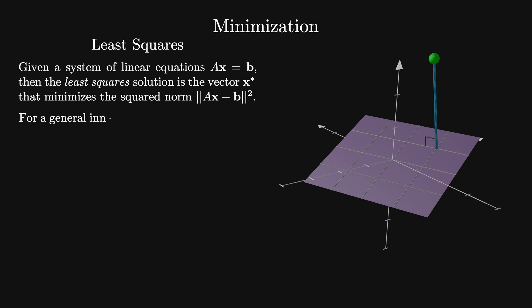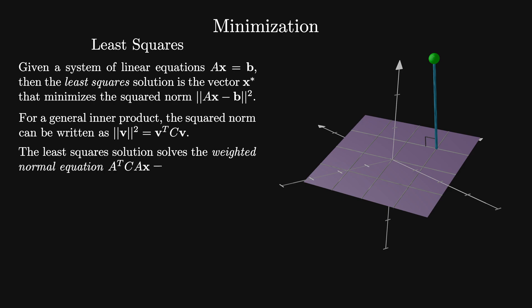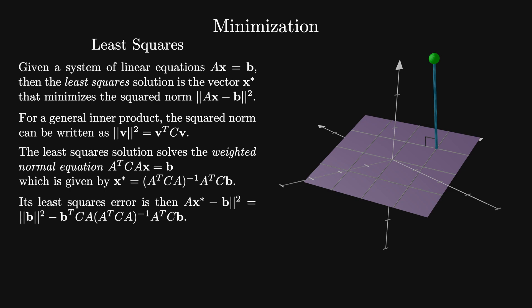For general inner products, we can write the weighted squared norm of a vector v as v^T C v, where C is a matrix of weight factors. The least squares solution solves the weighted normal equations A^T C A x equals b, giving x* equals (A^T C A)^{-1} A^T C b. This has least squares error given by the squared norm of b minus b^T C A(A^T C A)^{-1} A^T C b.